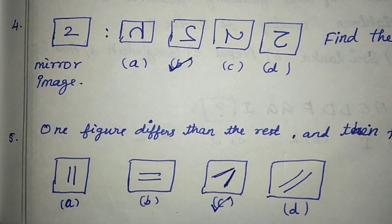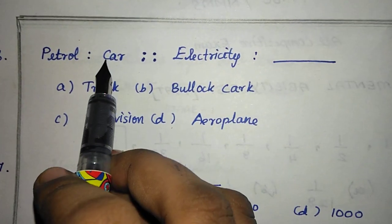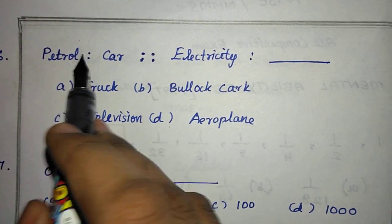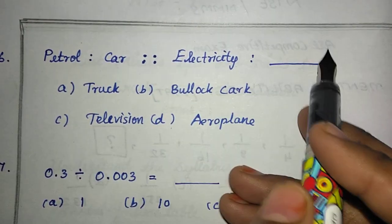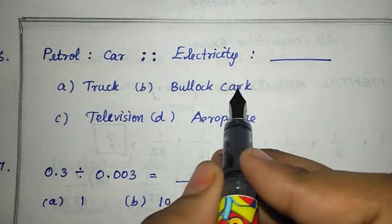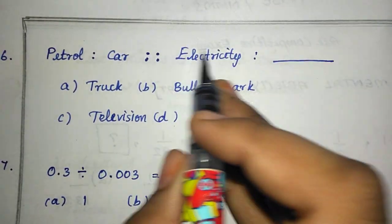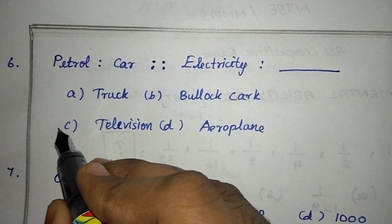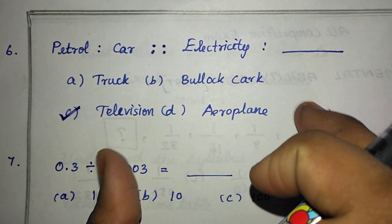Next is petrol and car. Electricity is the right answer. Truck is the right answer. Aeroplane is the right answer. Television is the right answer. Option C is the right answer.